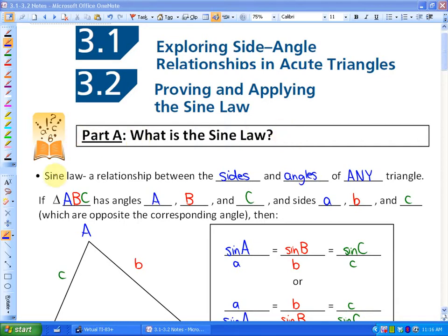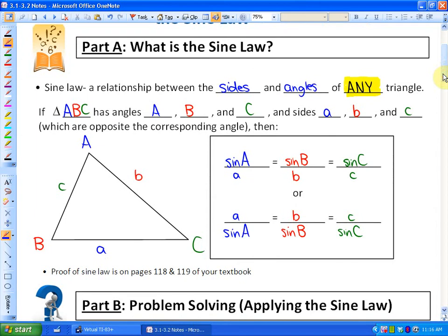All right, the sine law. The sine law is a relationship between the sides and angles of any triangle. And that's the difference between this and doing SOHCAHTOA, because SOHCAHTOA, or right-angled trigonometry, only has to do with right triangles. Here's what the sine law states. If triangle ABC, and I'm using capital letters for that triangle to represent the corners or the vertices, has angles A, B, and C, and sides a, b, and c lowercase, which are opposite the corresponding angles. So what that means is that the uppercase angles are always opposite their lowercase equivalent. So uppercase B is opposite lowercase b. Uppercase C is opposite lowercase c. That's an important concept to understand.